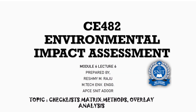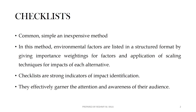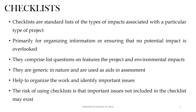The checklist method is a very common, simple and inexpensive method. You can use different environmental factors in this list by giving important readings for different factors. You can use scaling techniques and the over-impact method for different alternatives. These are strong indicators of impact identification and can effectively garner the attention and awareness of audiences. This is a standard list associated with a type of impact and particular project.